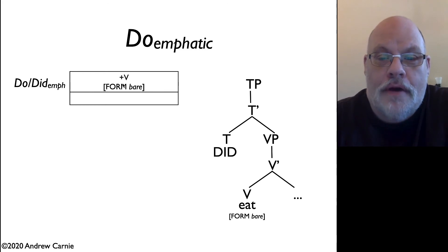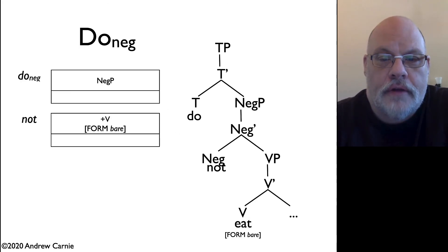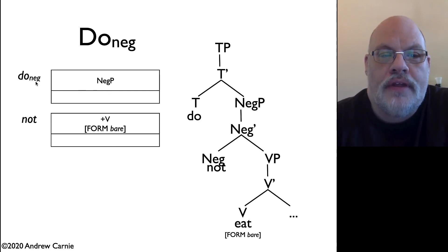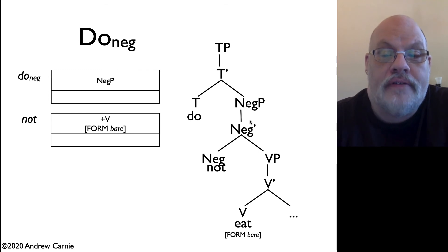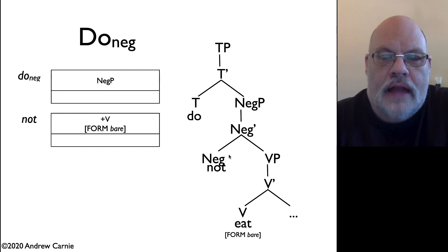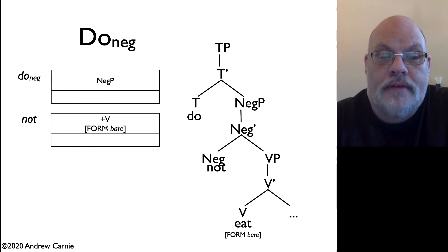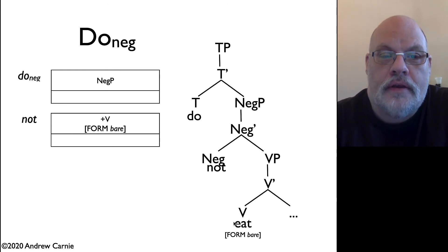This is pretty straightforward. If you have emphasis, you just use this particular auxiliary. The negative form is a little more complicated. What we want with the negative form of do is that it always takes a NegP. You haven't seen NegP before, but essentially 'not' has its own X-bar structure. So 'not' has this little NegP on top of it. Do-neg takes NegP as its complement. And then NegP takes a plus-V form — here in this case a verb phrase — and that verb form must be bare as well, just like the previous example.